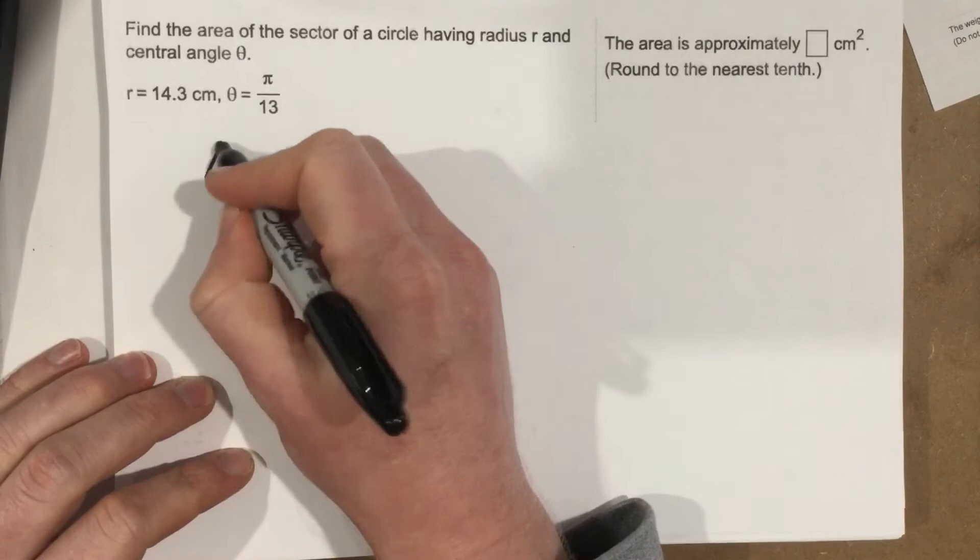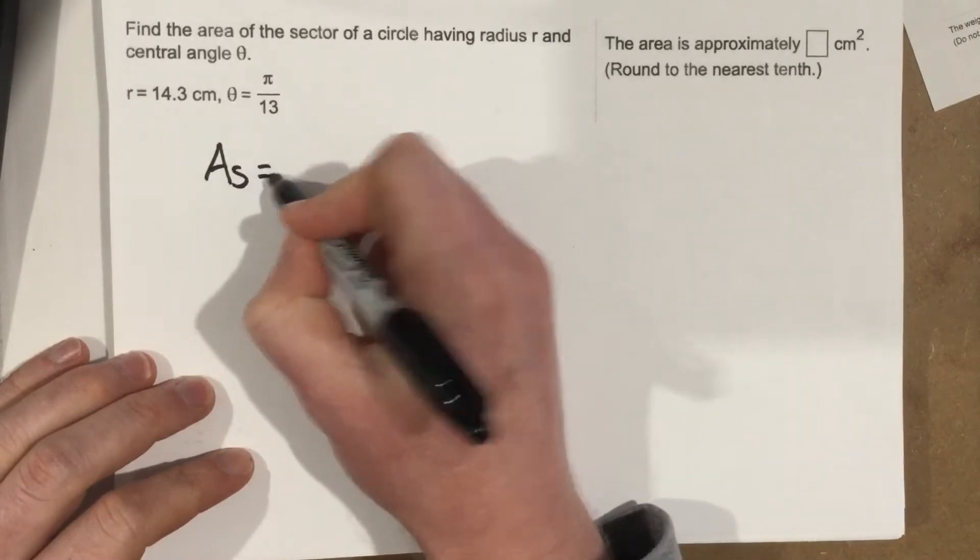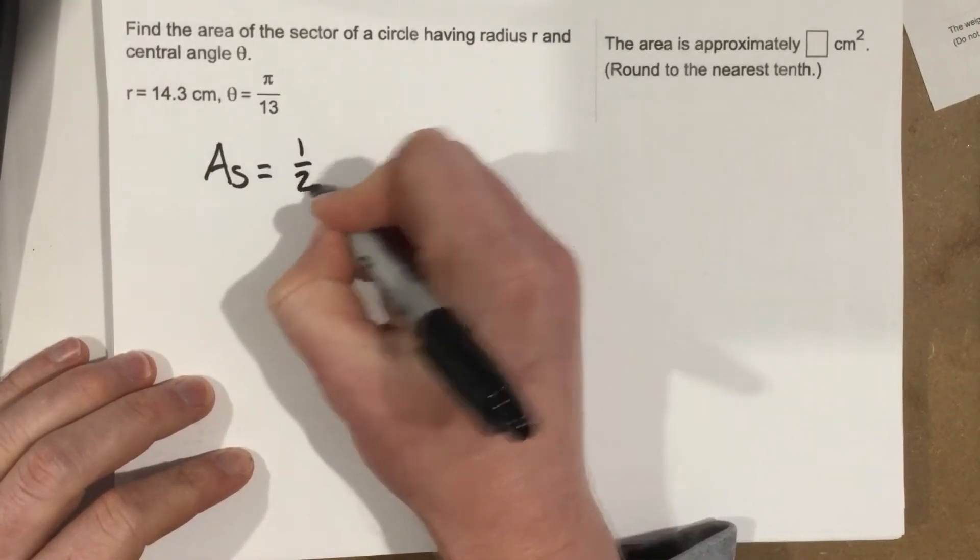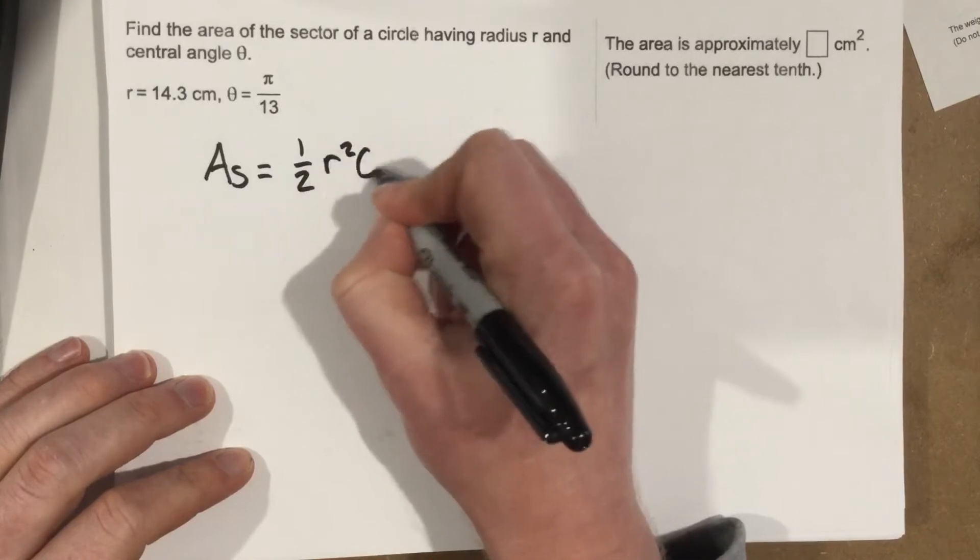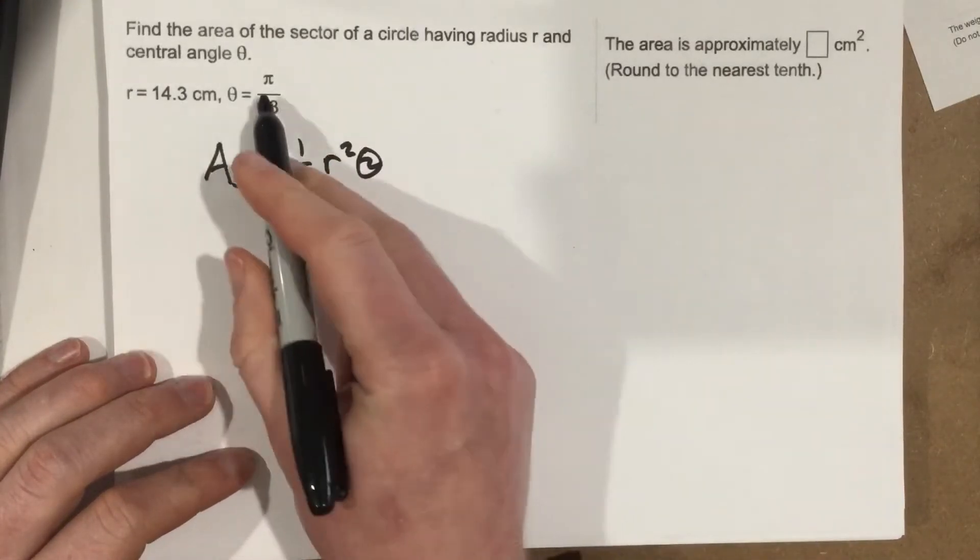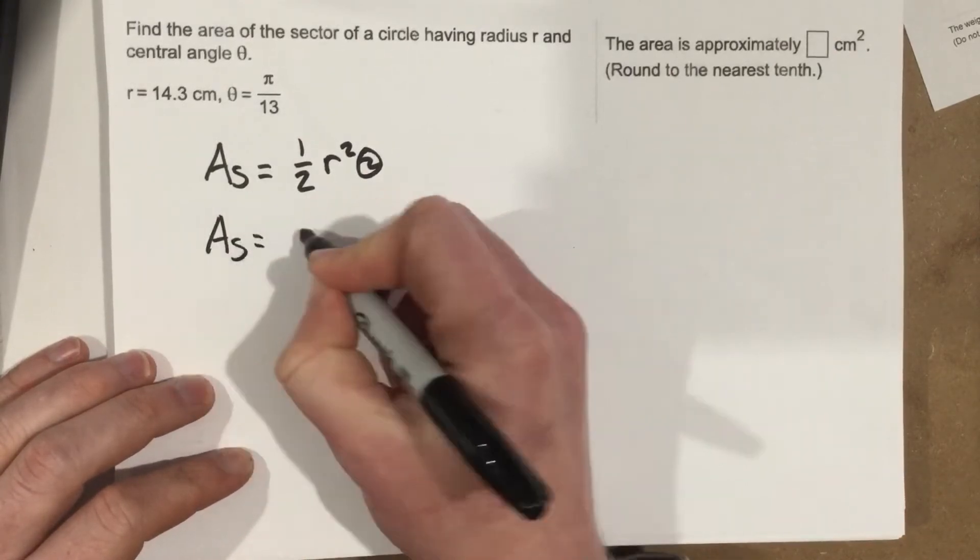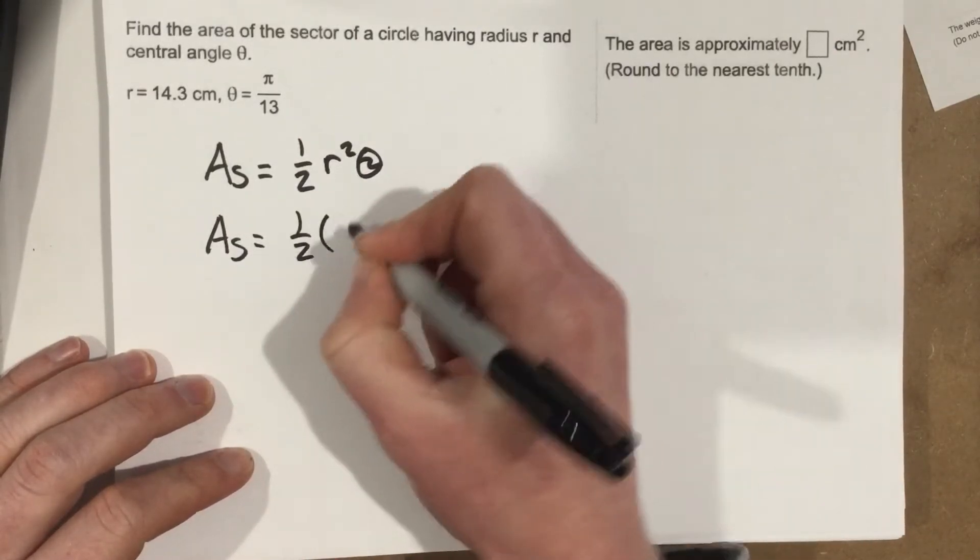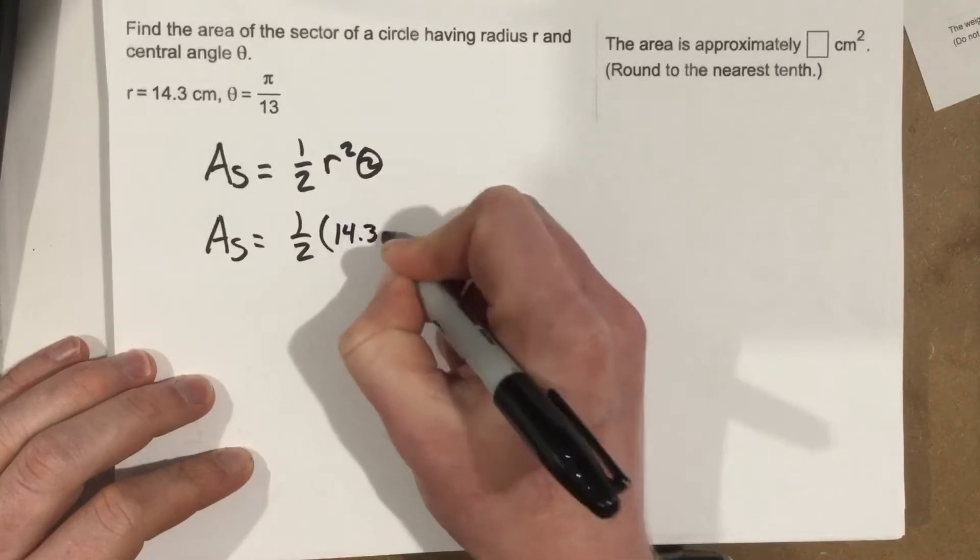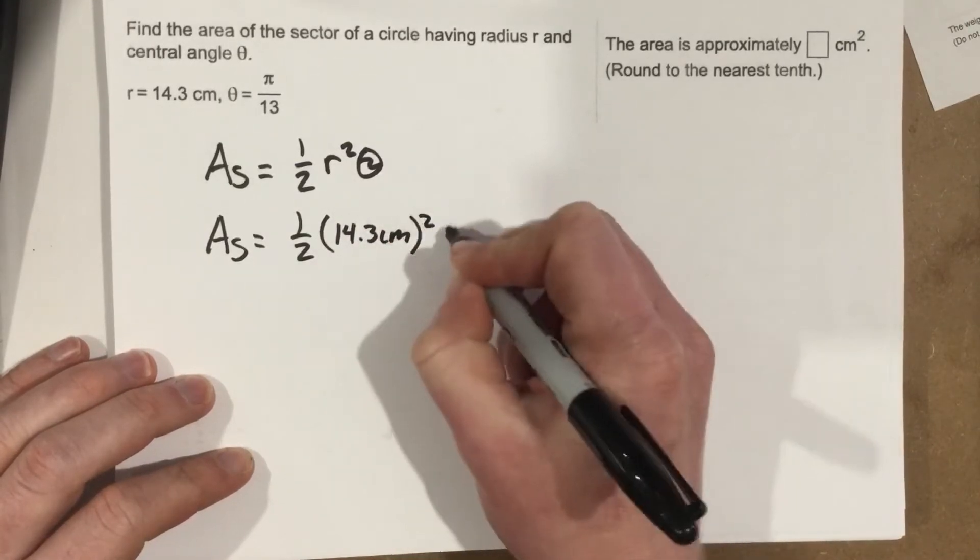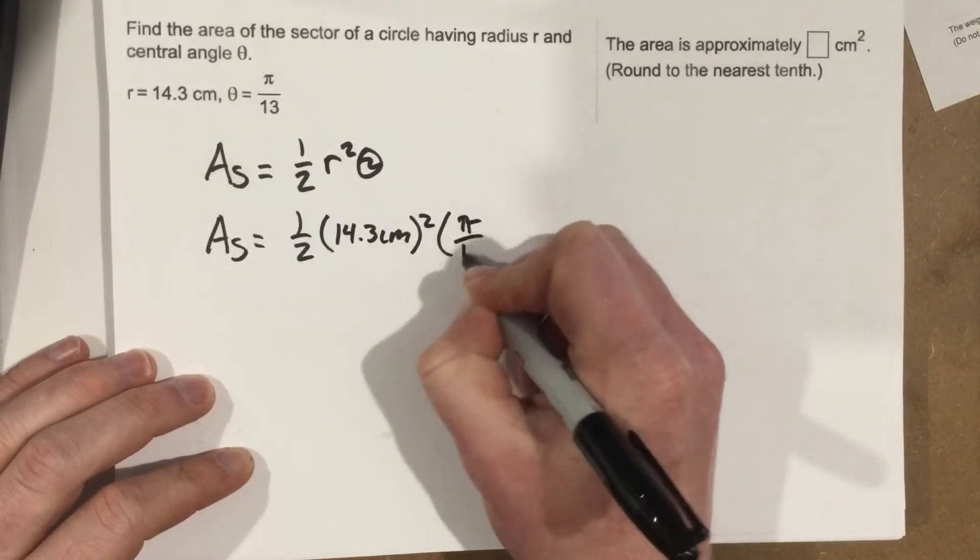We already know area of a sector is one-half r squared theta. If they give us r as 14.3 and theta is pi over 13, we can say area of sector equals one-half times 14.3 centimeters squared times pi over 13.